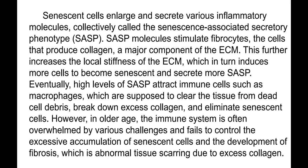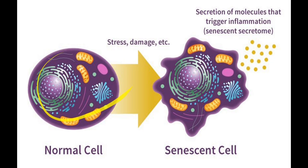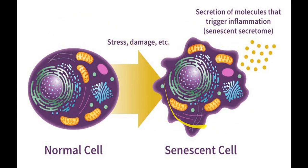However, in older age the immune system is often overwhelmed by various challenges and fails to control the excessive accumulation of senescent cells and the development of fibrosis — abnormal tissue scarring due to excess collagen. Senescent cells also become larger, accumulate more mitochondria, develop vacuoles filled with lipids, and are very active in producing pro-inflammatory protein molecules.